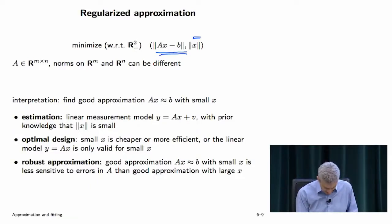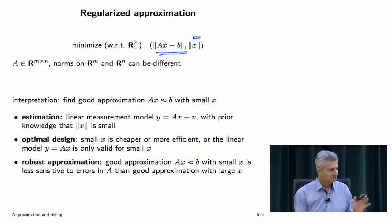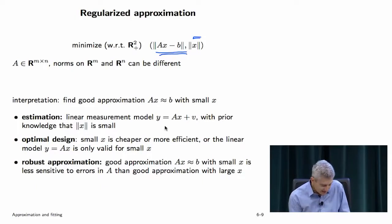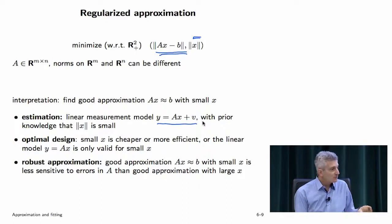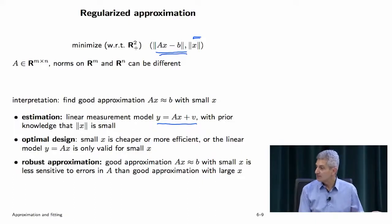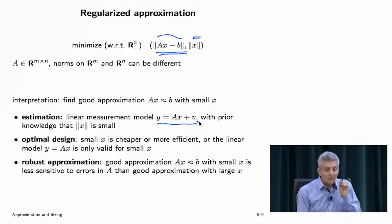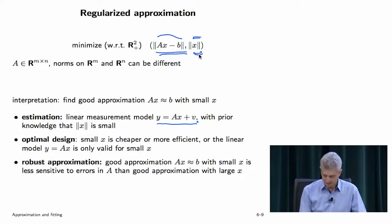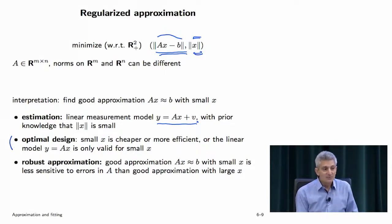In estimation, you might say: I happen to know what I'm observing is y equals Ax, so Ax minus b is v (the noise), and you know that's small. But you also have prior knowledge that x is small. In optimal design, you might not insist that Ax equals b exactly — you will give up on that, simply get close enough. It's a bi-criterion problem with a whole Pareto-optimal curve, and you determine where to operate on that curve once you see it.